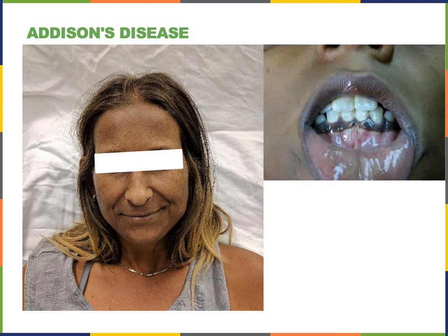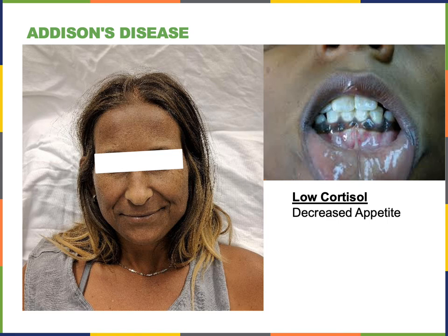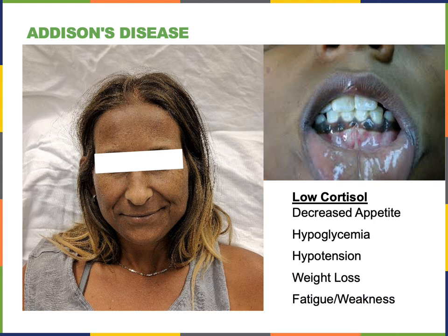The opposite of Cushing's syndrome is Addison's disease, where there is low cortisol. Addison's disease results from an autoimmune attack on the adrenal cortex, destroying the cells in the zona fasciculata that produce cortisol. The resulting abnormally low cortisol level leads to decreased appetite, hypoglycemia (low blood glucose), hypotension (low blood pressure), weight loss, and fatigue and weakness — largely because of decreased appetite, low energy intake, and low blood glucose, causing cells to essentially starve for energy.